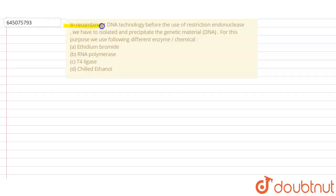In recombinant DNA technology, before the use of restriction endonuclease, we have to isolate and precipitate the genetic material, that is DNA. For this purpose, we use the following different enzyme or chemical.